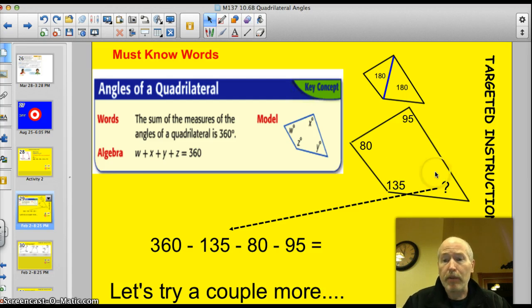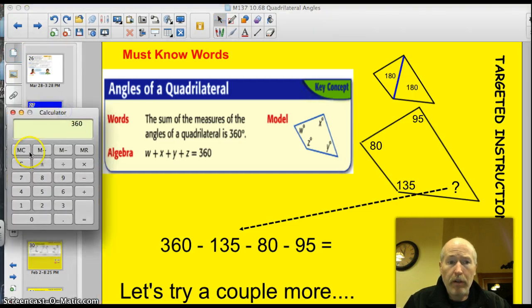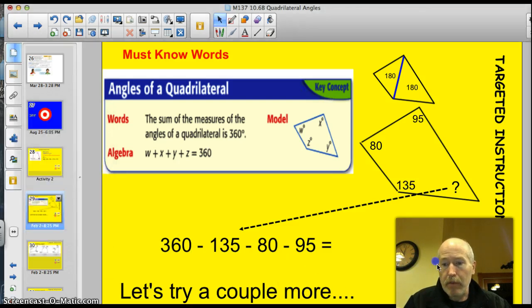So let's try this example together. Here's that same quadrilateral, and instead of w, x, y, and z, I put in the actual measures, with the exception of one. So how do we solve that? Let me just slide this guy over a touch, get my calculator out. Alright, well, I take 360, and I just subtract the angles. I subtract 135 for that first angle. I subtract 80 for the second angle. And I subtract 95 for the third angle. And I get 50 degrees.